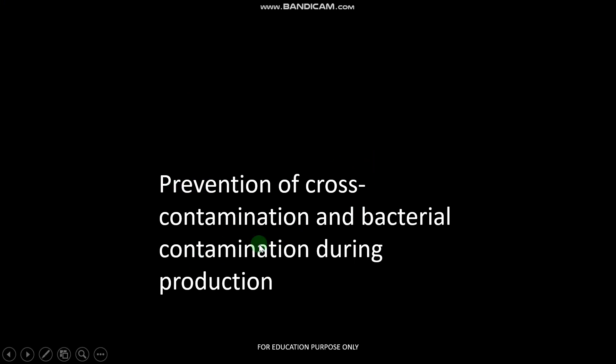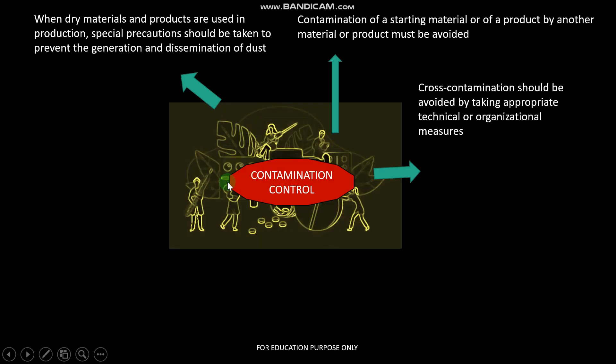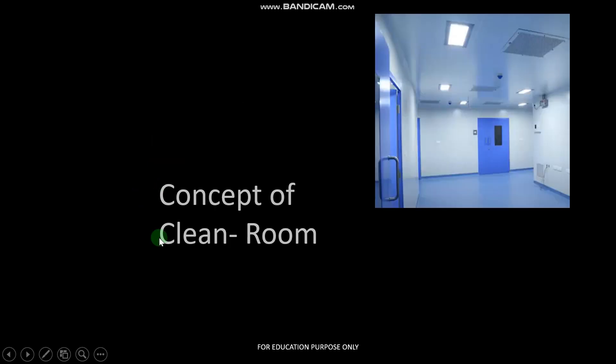Prevention of cross-contamination and bacterial contamination during production is critical. Contamination of starting material or of a product by another material must be avoided. Cross-contamination should be avoided by taking appropriate technical or organizational measures. There are different provisions in industry; we will focus on three main core areas: the clean room concept, the HVAC concept, and the airlock system.